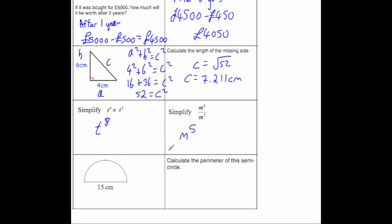The last question says calculate the perimeter of the semicircle. To get the perimeter of the semicircle, we know the bottom is 15, we just need to get the arc for the semicircle, this part here. The circumference of the whole circle would be pi times diameter. The diameter is 15, so we're going to do pi times 15 to get the circumference of the whole circle.